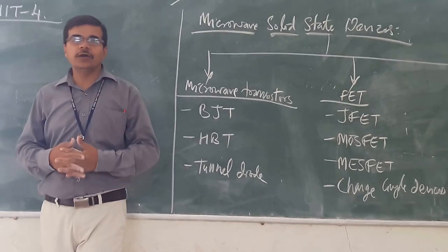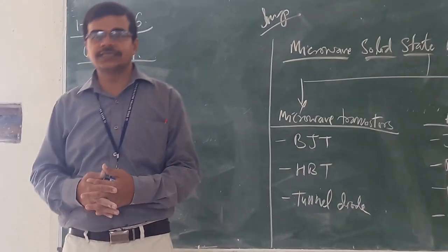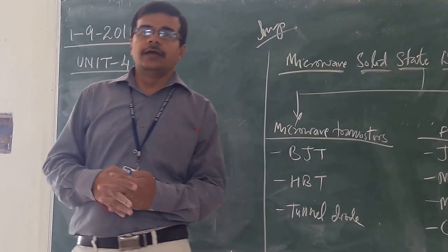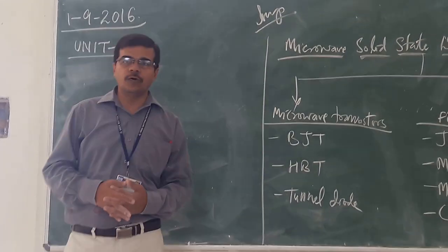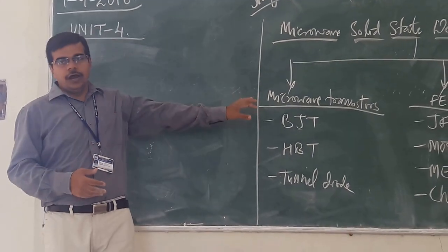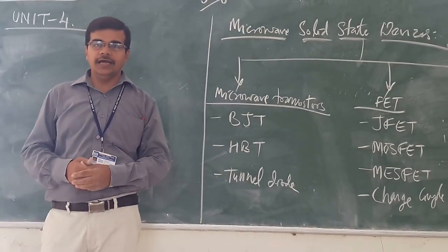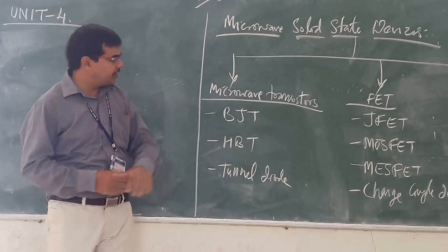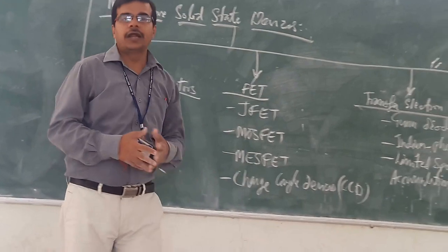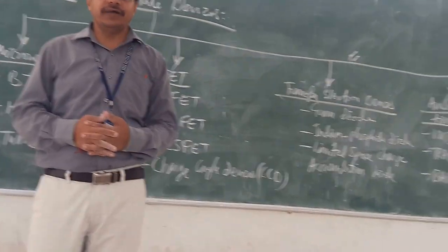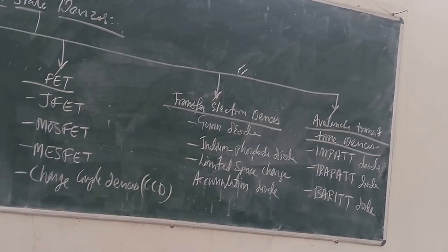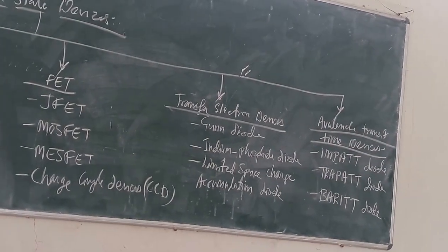Now let us see the classification of microwave solid state devices. We can classify them into four groups. The first one is the microwave transistor, the second one is FET, the third one is transferred electron devices, and finally you have tunnel diode devices.